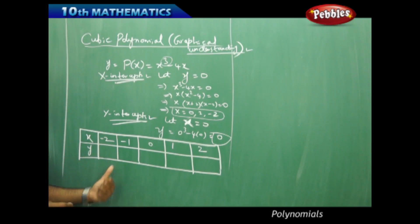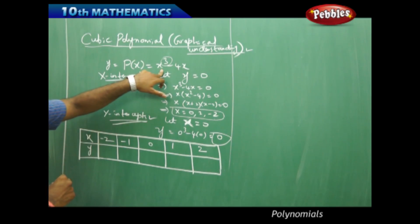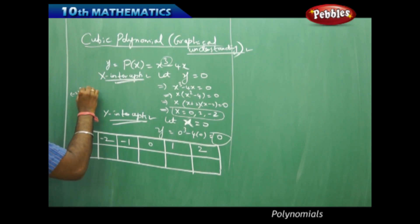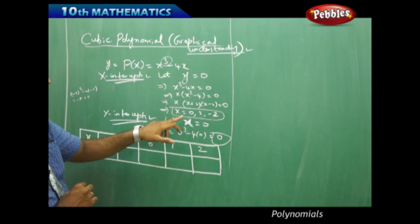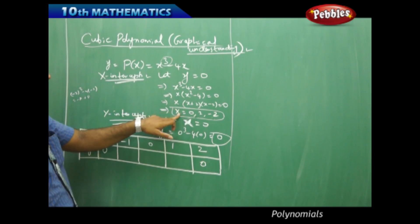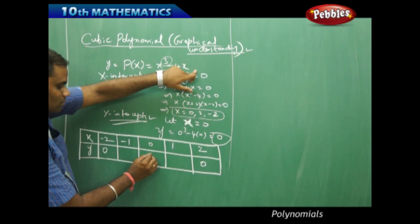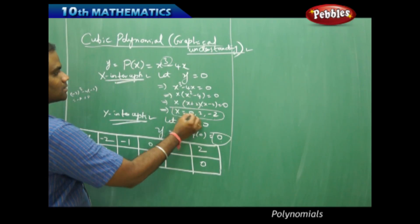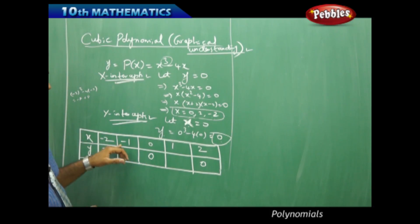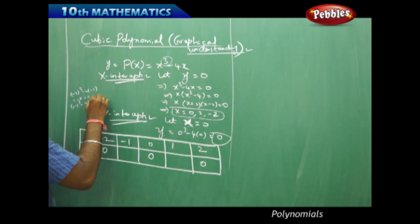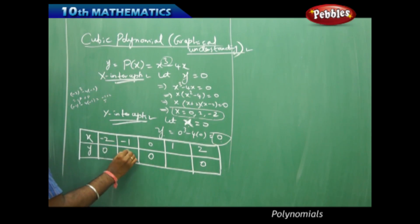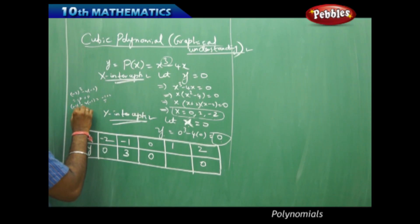When x is minus 2, I substitute into the polynomial: minus 2 cubed minus 4 times minus 2, which gives minus 8 plus 8, equal to 0. Similarly, when x is 2, y is also 0, and when x is 0, y is 0, since these are the x-intercepts and origin. When x is minus 1, y is 3. And when x is 1, 1 cubed minus 4 times 1 gives minus 3. So y equals minus 3 when x equals 1.